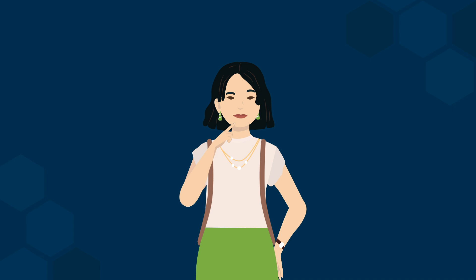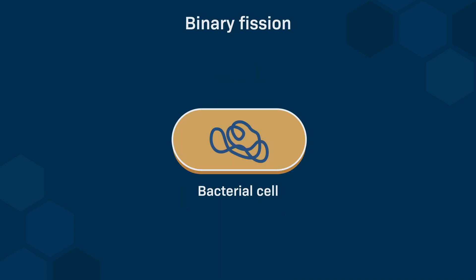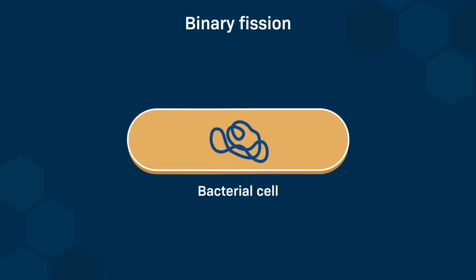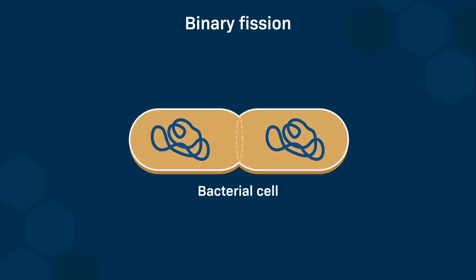We can take an example of a growing bacterial cell. These bacterial cells will divide by a process called binary fission. During binary fission, cells elongate and then separate to produce two identical resulting bacteria.